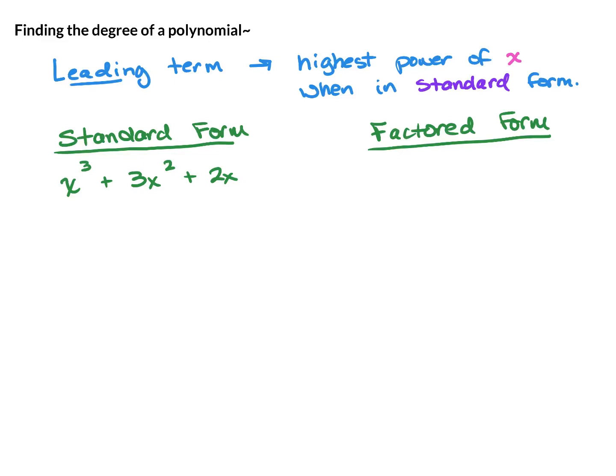To find the degree of a polynomial, you have to look at its leading term. The leading term is the highest power of x when the polynomial is in standard form. Standard form means that everything is all multiplied out, just like in this first example.